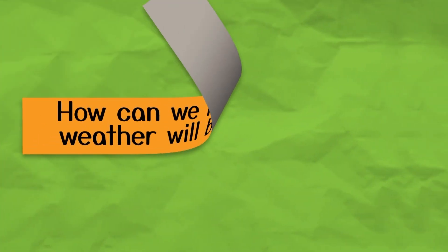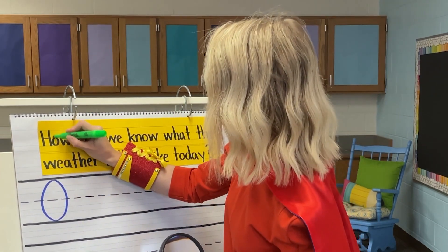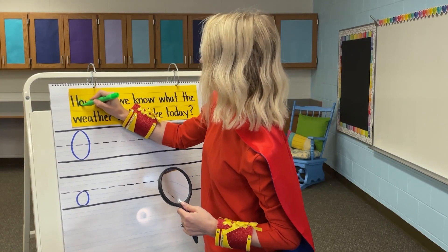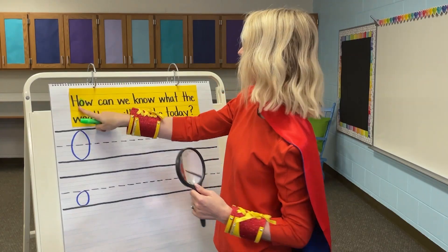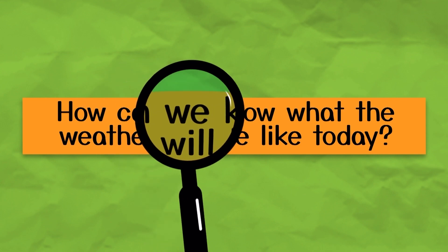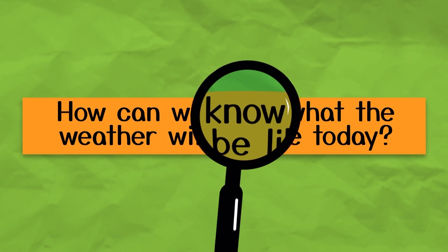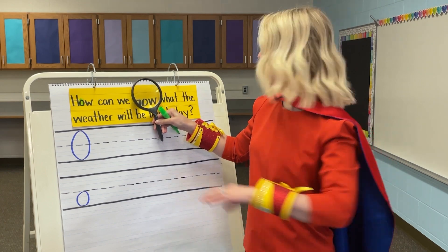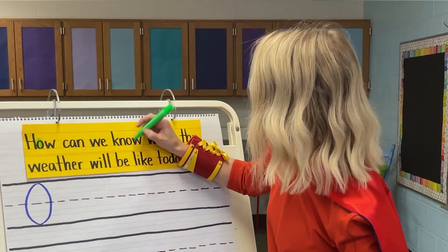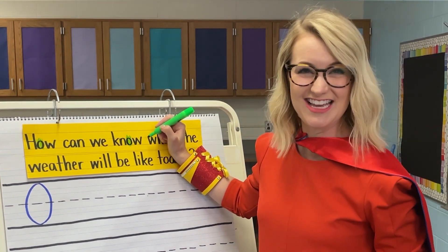Let's look at our first word — the word how. Do you see the letter O in the word how? You do! That's right, it's right here in the middle. There is a lowercase O. How. Our next word is can. Do you see the letter O in the word can? Nope. Our next word is the word we. Do you see the letter O? Nope. Our next word is the word no. Do you see a letter O? Yes, here it is — a lowercase O. Listen to the ending sound in N-O. We hear the long O sound at the end of that word.